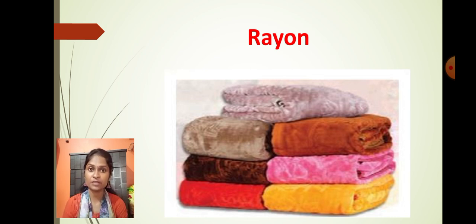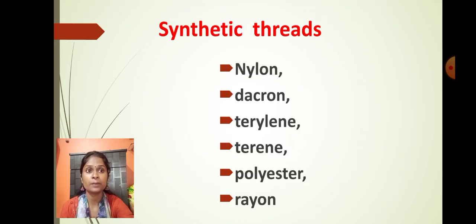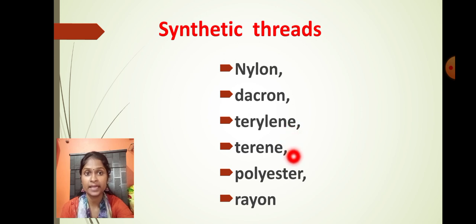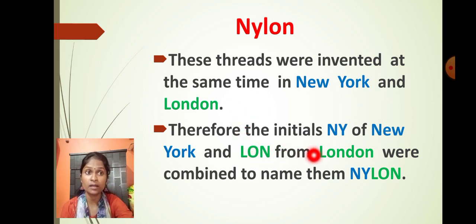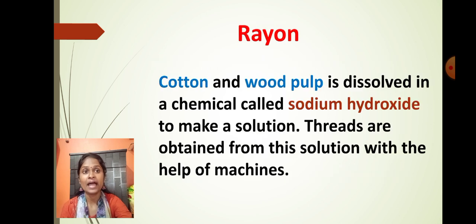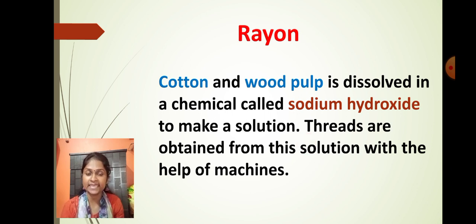Let's recall what we have learned today. We learned about different types of synthetic fiber: nylon, dacron, terylene, terrine, polyester, and rayon. Nylon is a type of thread artificially discovered in New York and London — taking NY from New York and LON from London to form the name nylon. Rayon is obtained by dissolving cotton and wood pulp in sodium hydroxide; the threads obtained are called rayon because they shine bright like the sun's rays.